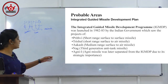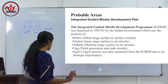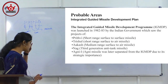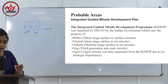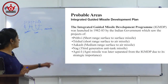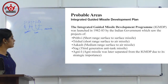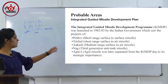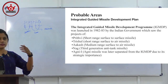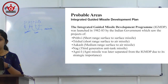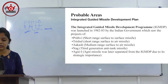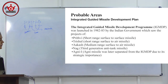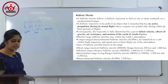Now I will explain the five IGMDP missiles. Prithvi is a short-range surface-to-surface missile. Trishul is a short-range surface-to-air missile. Akash is a medium-range surface-to-air missile. Nag is a third-generation anti-tank missile. Agni was later transferred out of IGMDP due to its strategic importance. We have Agni 1, Agni 3, and the Agni series.